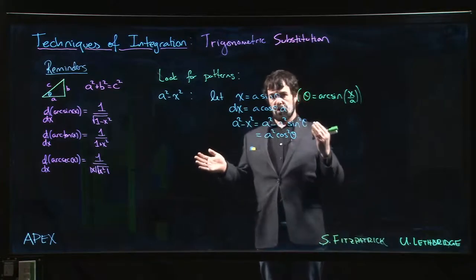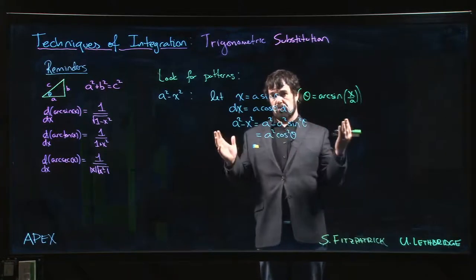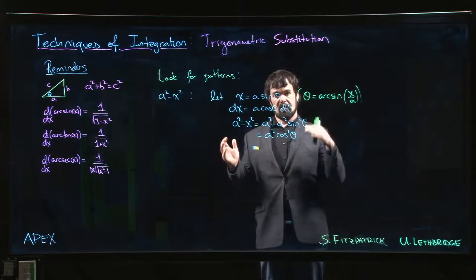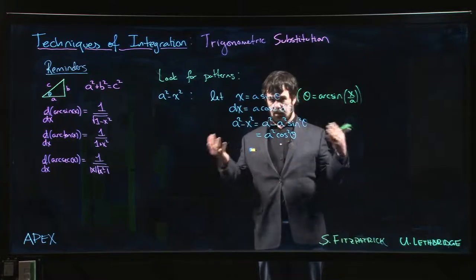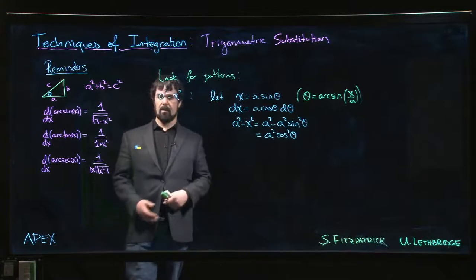That's where this comes in. If theta is defined as arc sine of x over a, well arc sine has a range from minus pi over 2 to pi over 2, which is a range on which cosine is positive. So we can guarantee that cos is going to be positive if we're making this substitution. So when we take the square root, we don't have to worry about absolute value. We do get the right sign.